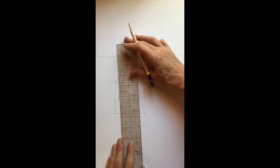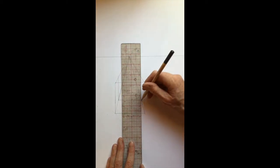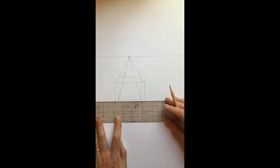I'm going to start by making a cube in one-point perspective, and then we're going to place ellipses in the top and bottom plane.